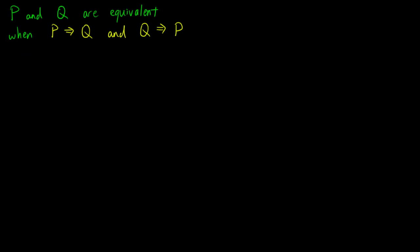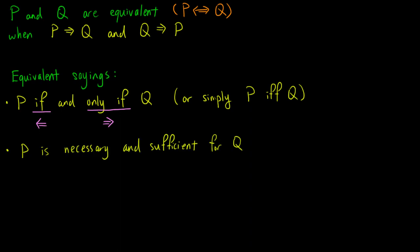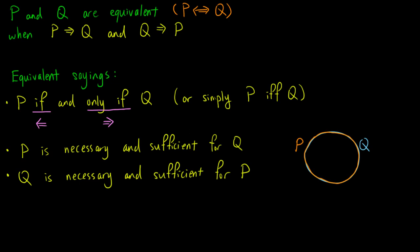In the case where P implies Q and Q implies P, we say that P and Q are equivalent. We represent it by a double arrow. There are a few equivalent sayings. The most common is 'P if and only if Q,' or simply 'P iff Q.' This is consistent with our previous definition because 'P if Q' means Q implies P, and 'P only if Q' means P implies Q. We also have 'P is necessary and sufficient for Q,' or 'Q is necessary and sufficient for P.' In a diagram, P and Q are represented by two circles which completely overlap each other, so they are essentially the same.